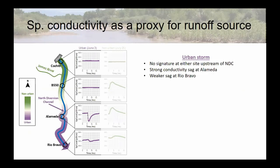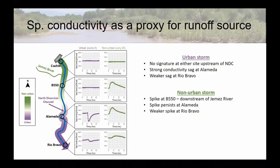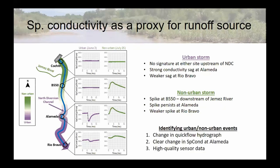Specific conductivity was found to be a really nice proxy for runoff source. For an urban storm, starting at the top at Cochiti and Bernalillo 550, you don't really see any signature. Once you get below the north diversion channel at Alameda, you see a really clear conductivity sag, and that sag propagates down to Rio Bravo. For the non-urban, it's more or less the opposite — we see a spike coming in below the Jemez off of the non-urban catchment and that propagates all the way downstream. So to identify urban and non-urban events, we use quick flow to identify events, specific conductivity to determine if it was more urban or non-urban, check that with our gauge sites, and only use high-quality sensor data.